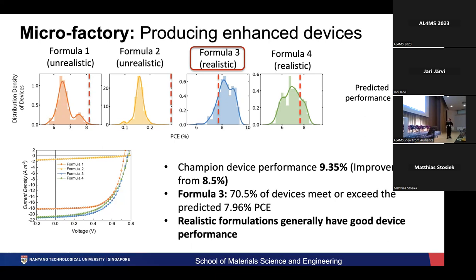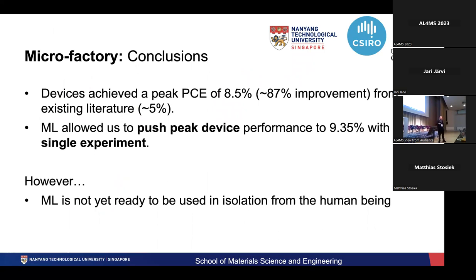So in conclusion, we have achieved devices of a peak efficiency of about 8.5% — that's about an 87% improvement over existing literature. The good news is that ML actually allows us to push that limit a little bit. And even better news for us is that I still have a job, because the human being can't be taken out of the process just yet — we sort of need this intuition to basically guide it along.